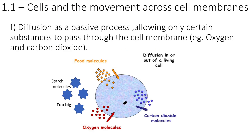In the next video, we're going to be looking in a little bit more detail about diffusion as a passive process, and oxygen and carbon dioxide as examples of why we need diffusion in cells.